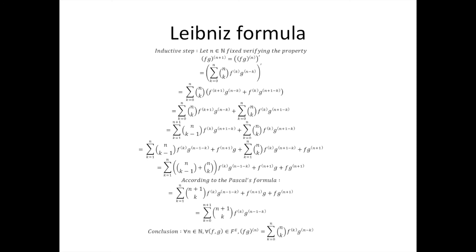And this is equal to the sum from k equal to 0 to n+1 of n+1 choose k, times the kth derivative of f, times the (n+1 minus k)th derivative of j. And the conclusion is: for all natural numbers n, for all functions f and j, the nth derivative of fj is equal to the sum from k equal to 0 to n of n choose k, times the kth derivative of f, times the (n minus k)th derivative of j. I hope that this video can be useful. See you soon!